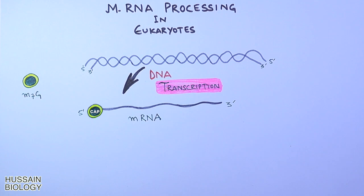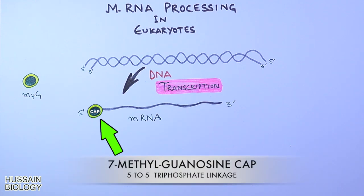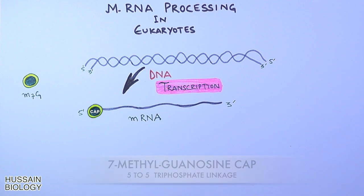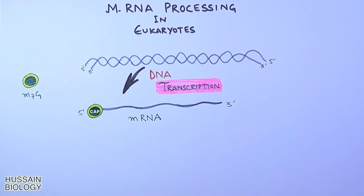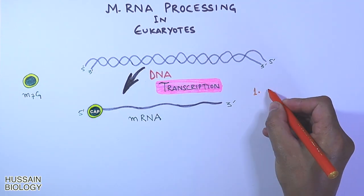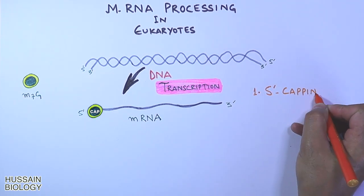The 5' end of the mRNA is capped by M7G — that is, the 7-methylguanosine cap — as shown in the diagram. So in mRNA processing, the first step is 5' capping.